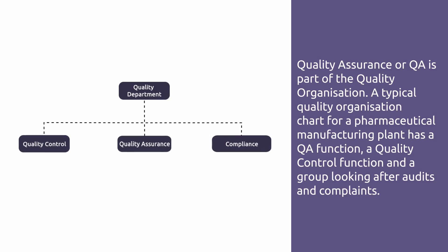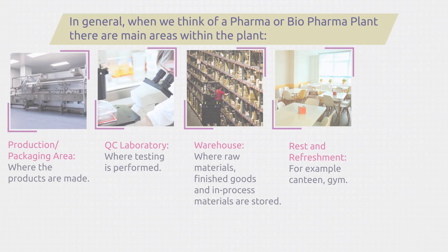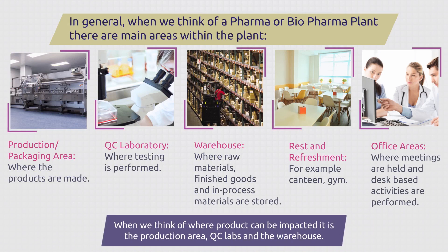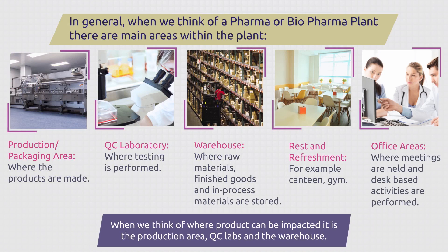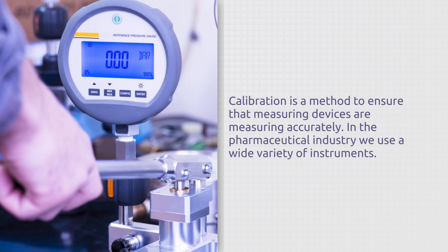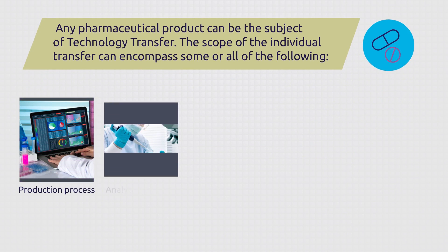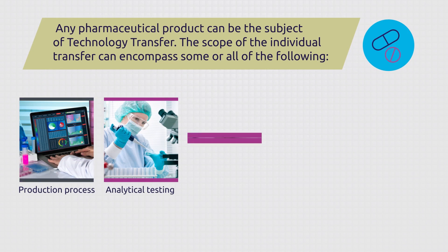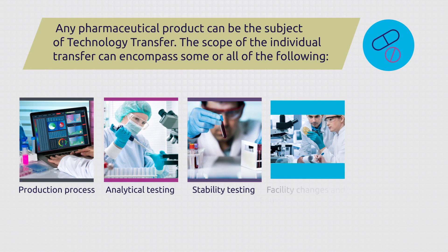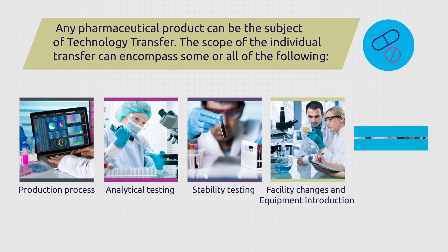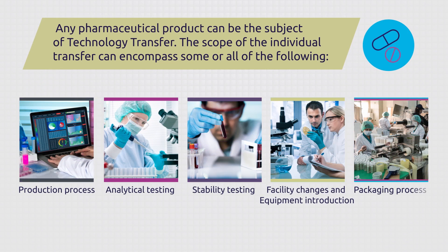First, Quality Assurance. Next, Premises and Equipment. This is followed by Calibration. The next QSE is Technology Transfer, which involves transferring processes from development to production, or from one manufacturing site to another, while ensuring the product quality is maintained.